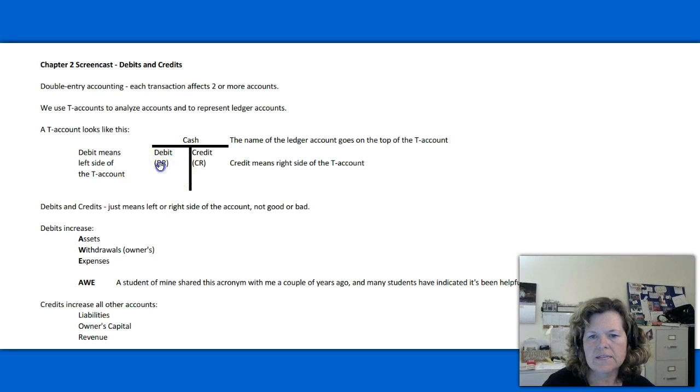Likewise, on the right-hand side of the T-account, we will list credits to the account. Credits are often abbreviated CR, so you will see CR instead of the full word credit. And credit means right side of the T-account.